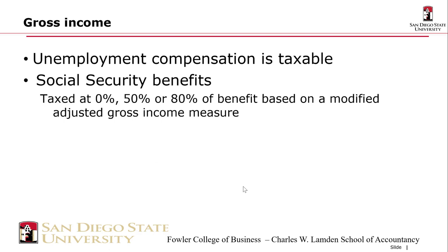Unemployment compensation is taxable — even though it feels unfair since you've lost your job and are receiving a government transfer, it is taxable. Social security benefits can be taxed at either 0%, 50%, or 85% depending on your modified adjusted gross income. You can start collecting social security at age 65 and a half, and benefits are based on employment tax contributions and past income. The taxation rate is a complicated calculation, and that brings us to the end of chapter four.